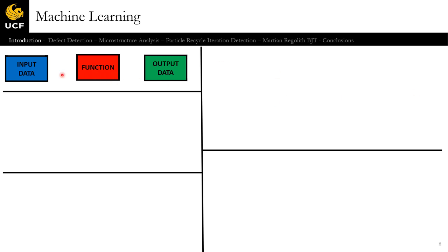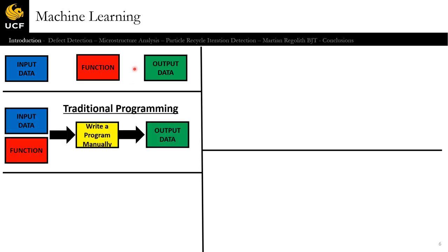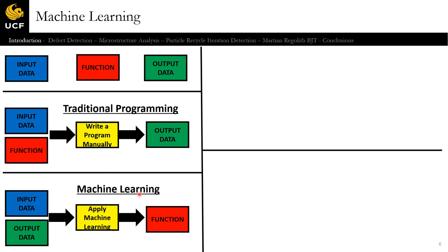Machine learning — as engineers, we have input data, a function, and output data. Traditionally, we have good knowledge of input data and the function, so we write a program manually. Machine learning flips that: if you have good knowledge of your input data and your output data, you apply a machine learning algorithm to learn your function. In most cases this is more efficient, and in some cases it can be more accurate.